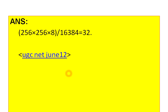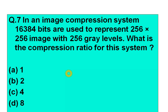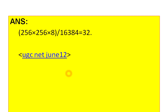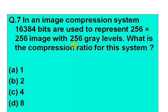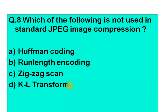The answer is 32. The compression ratio is calculated as: 250 × 250 × 8 divided by 16,384. The result is 32 — please check if that matches the given options and do tell me.